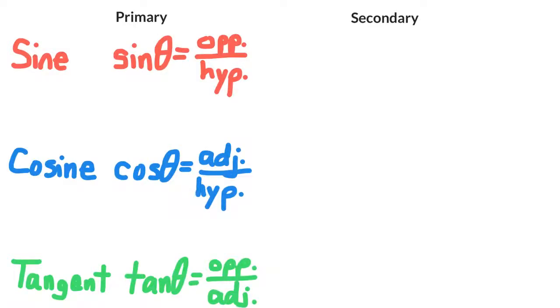The sine of an angle equals opposite over hypotenuse, cosine is adjacent over hypotenuse, and tangent is opposite over adjacent.